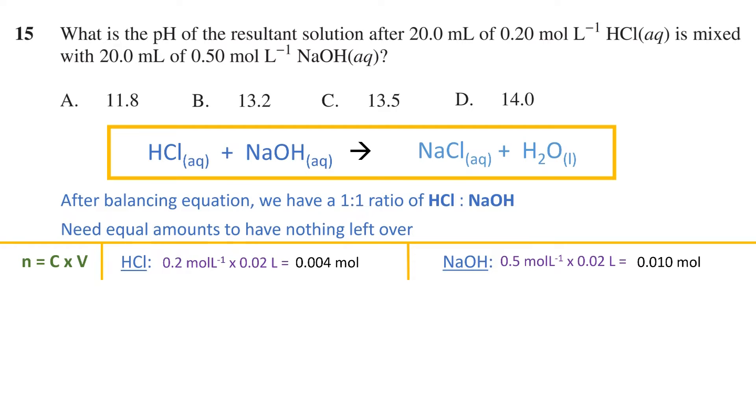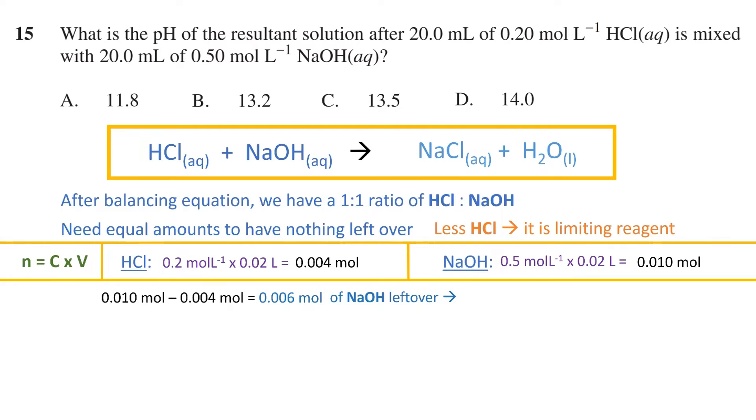We can see that there is less HCl, therefore it is the limiting reagent. We can calculate how much NaOH is in excess by subtracting the two. This gives us 0.006 moles of NaOH left over, and therefore 0.006 moles of hydroxide ions left over.